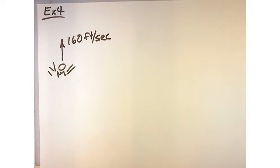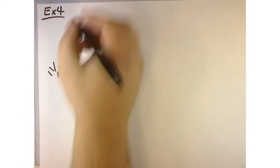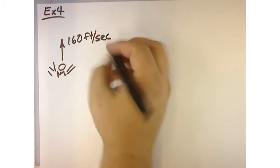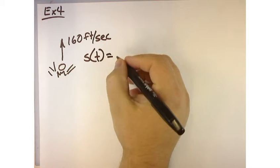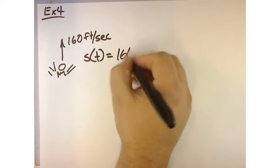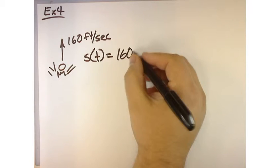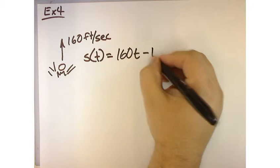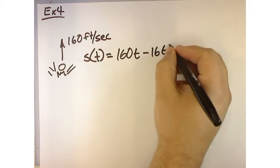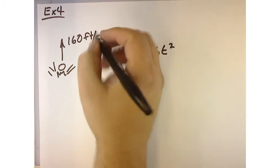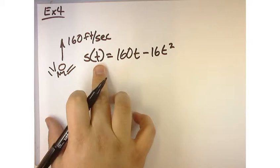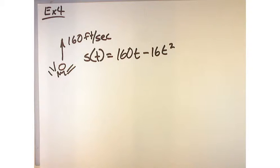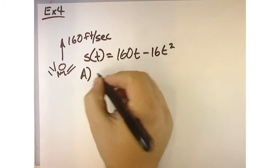For our purposes, they said that we can model the height of the rock as a function of time, which is equal to 160 times T minus 16 T squared, where T is time in seconds. This will give us the position in feet if we calculate time in seconds. Part A wants us to figure out how high does it go.